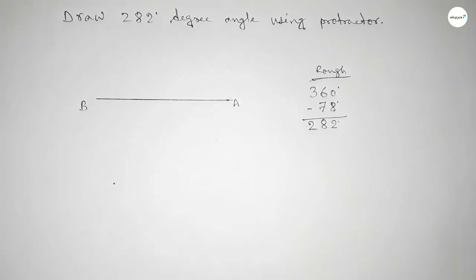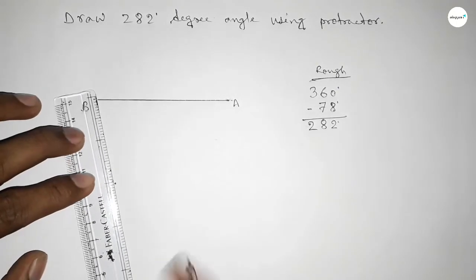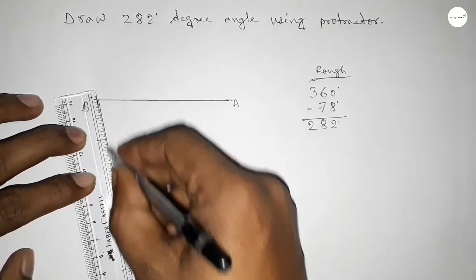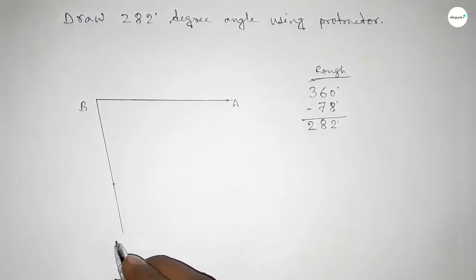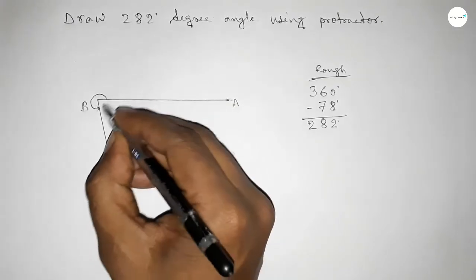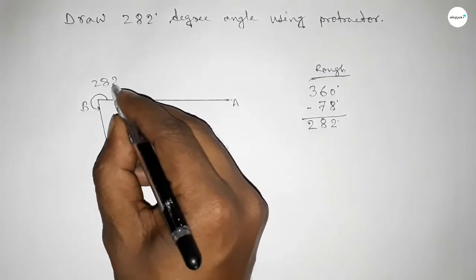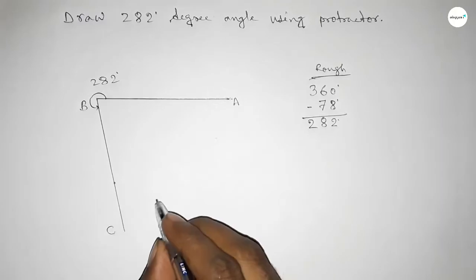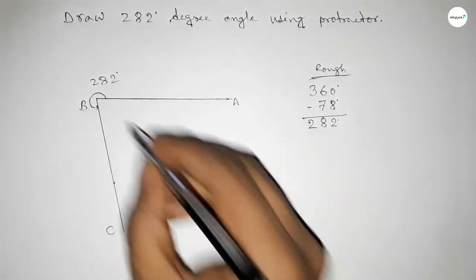Subtract 78 degrees from 360 degrees, then we can get 282 degrees. Now joining this side and taking here point C. So angle ABC up to this is 282 degrees.